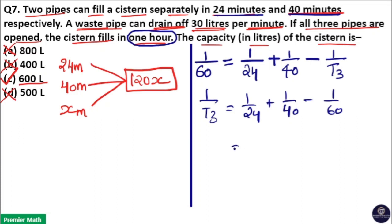Take the LCM of 24, 40, and 60. LCM is 120, and 24 goes 5 times in 120, 40 goes 3 times in 120, and 60 goes 2 times in 120. Now, 5 plus 3 minus 2 is 6. 6 by 120 is 1 by 20.